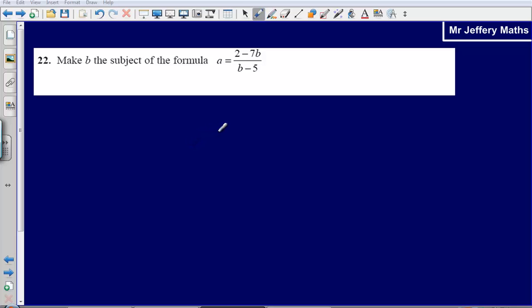This is question 22 from the 2008 non-calculator paper. Here we are asked to make b the subject of the formula. So we are given a equals 2 minus 7b over b minus 5.